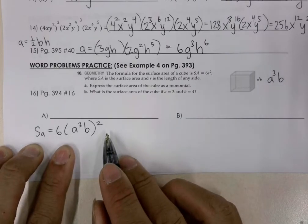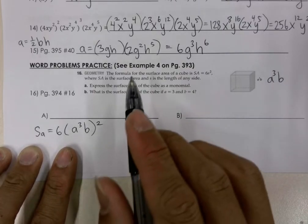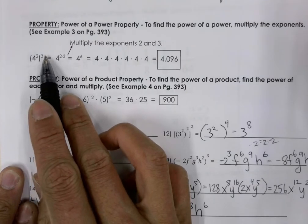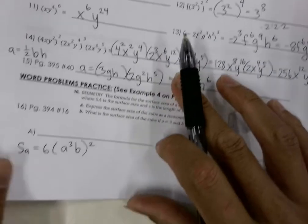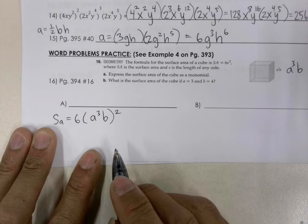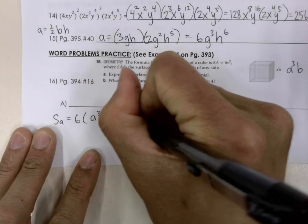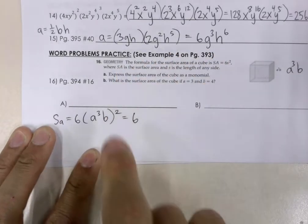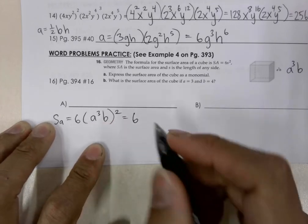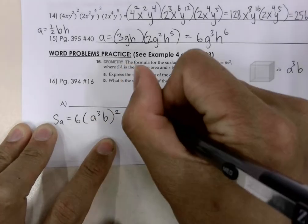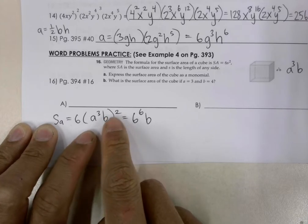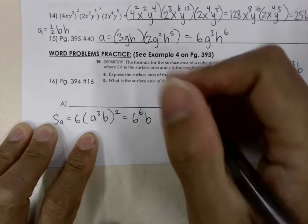So now what we have is we have the power of a power property. And what do we do if we have a power to a power? We multiply the powers together. So first of all, we're going to distribute out our power. So this is going to equal to 6. The power, the square does not apply to 6. The square applies to what's inside the parentheses. And so we have 3 times 2 is 6. And then we have b, and here, when we distribute out the power, it's b to the 1 times 2, which is 2.